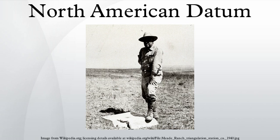The North American Datum of 1927 was based on surveys of the entire continent from a common reference point that was chosen in 1901, because it was as near the center of the contiguous United States as could be calculated. It was based on a triangulation station at the junction of the transcontinental triangulation arc of 1899 on the 39th parallel north, and the triangulation arc along the 98th meridian west that was near the geographic center of the contiguous United States.